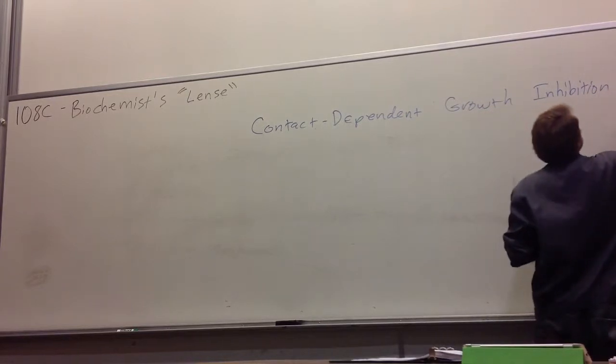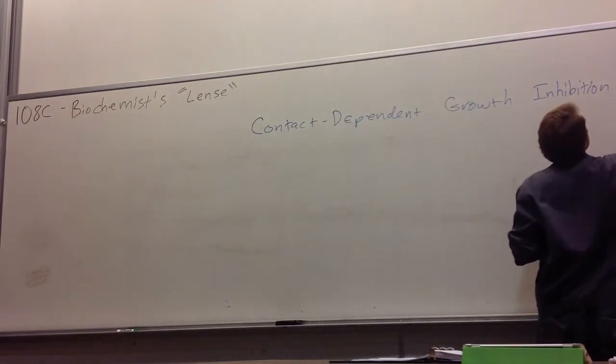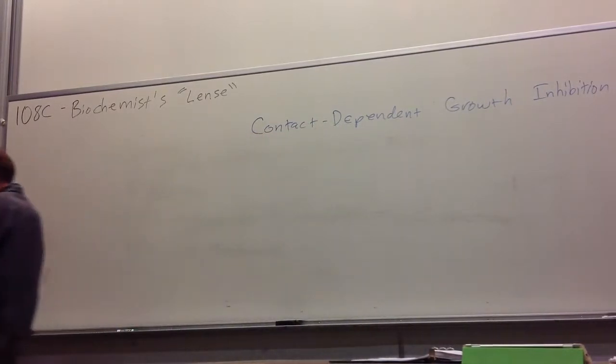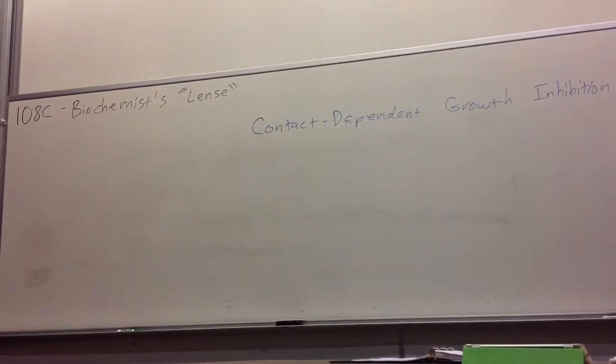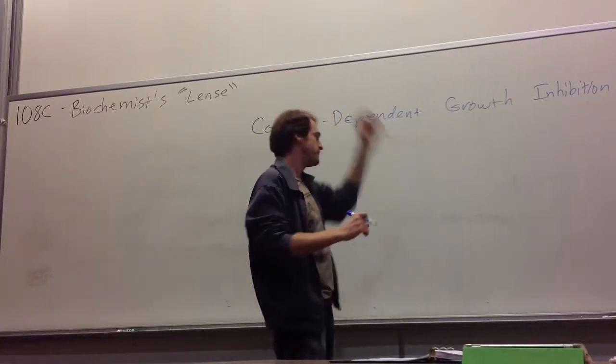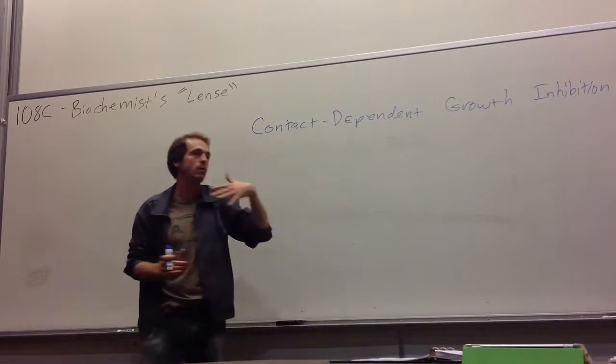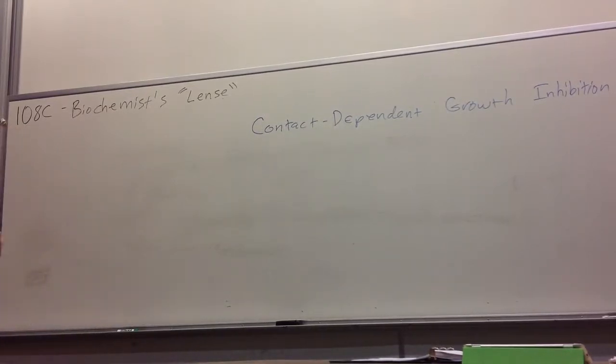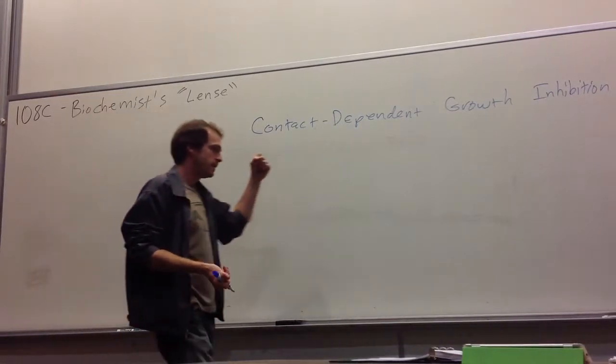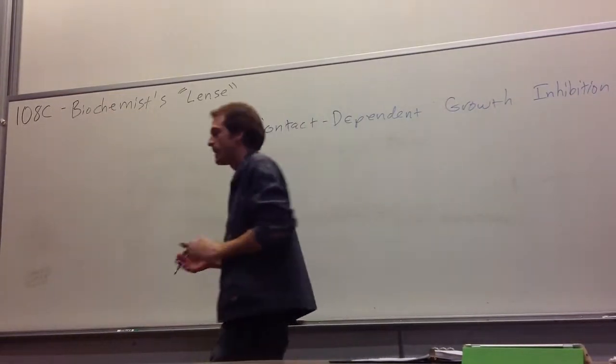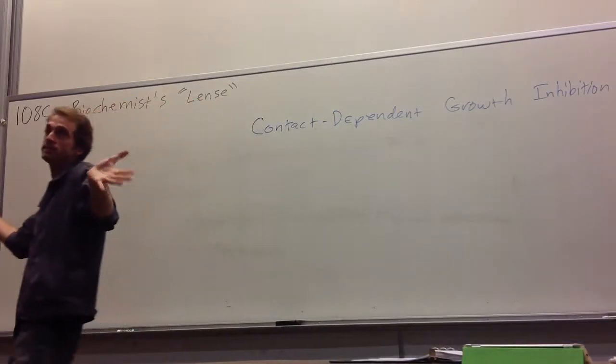The questions I ask are about a system called contact-dependent growth inhibition systems. We call these CDI systems. And the initial observation was kind of cool. There was a woman working with rat colonies, and all she was doing was she wanted to know what kinds of different E. coli species were present in these rats. Usually if you pull out a rat, you find that it has about a dozen or so different strains of E. coli in it. Hundreds and thousands of different species of bacteria, but if you look just at E. coli, one species, you see there's about a dozen different strains.